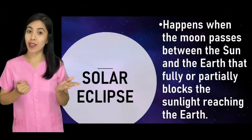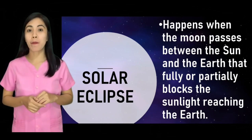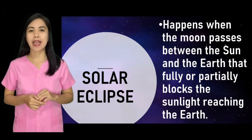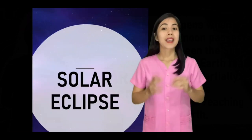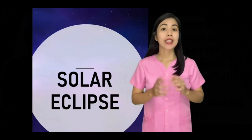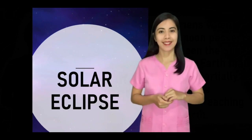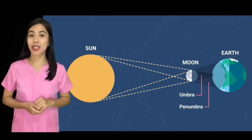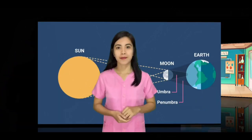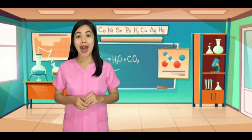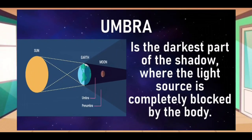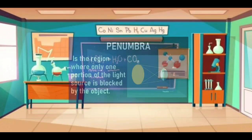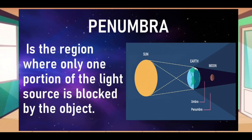The next type of eclipse is the solar eclipse. It happens when the moon passes between the sun and the earth, fully or partially blocking the sunlight reaching the earth. In other words, during solar eclipse, the moon's shadow falls on the earth. Here is the model of the solar eclipse. As you can observe, shadow forms when eclipse happens. Did you know that there are two distinct parts of shadow? We have the umbra and the penumbra. The umbra is the darkest portion of the shadow, while the penumbra is the region where only one portion of the light source is blocked by the object, or it is the lightest portion of the shadow.